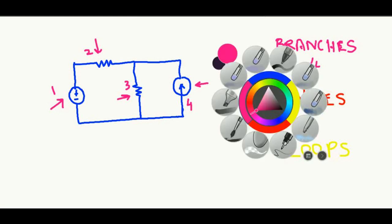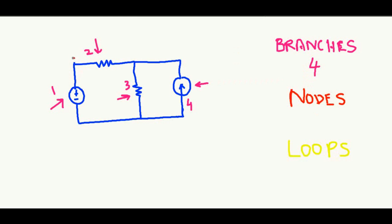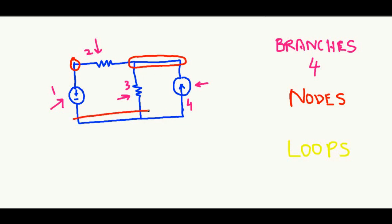The connecting points of these branches give us the number of nodes. Point number one connects branch one and branch two. Point number two connects branches two, three, and four. Then we have a third point where branch one, branch three, and branch four are connected. So altogether we have three nodes: A, B, and C.